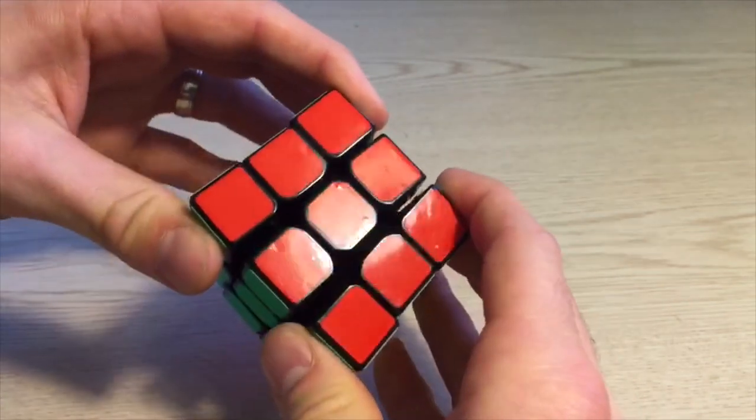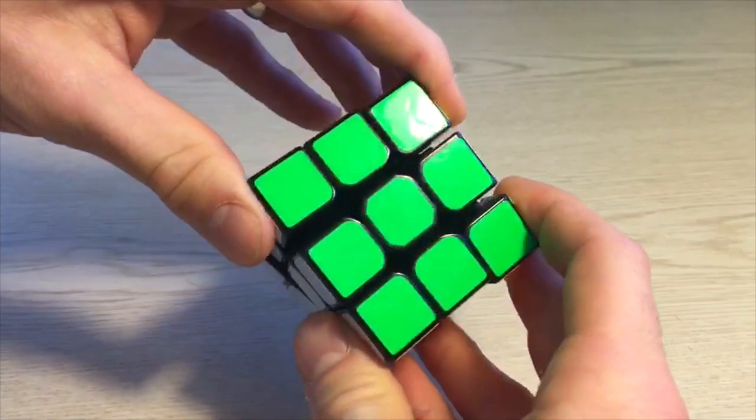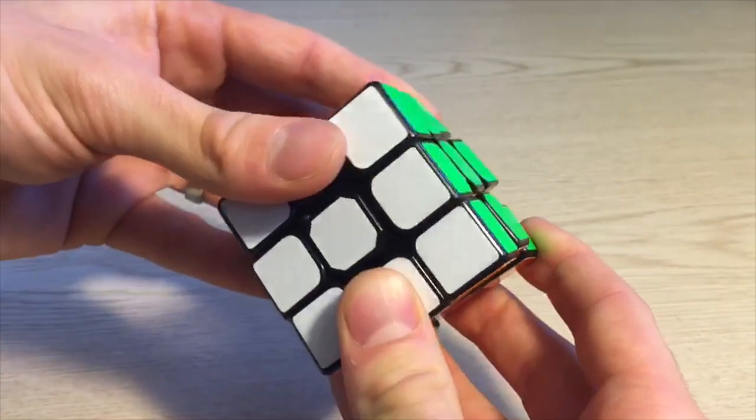Corner twisting seems to not be a problem and is next to impossible to pop this cube. I had to loosen the tensions quite a bit just to take an edge piece out.